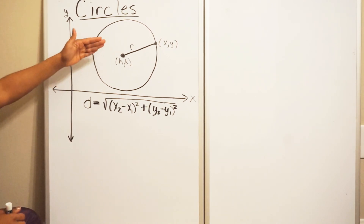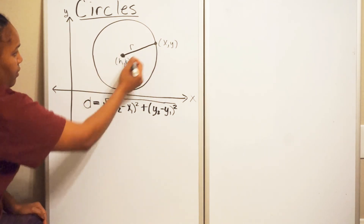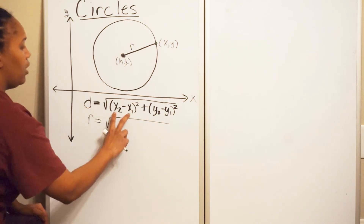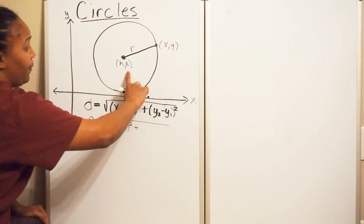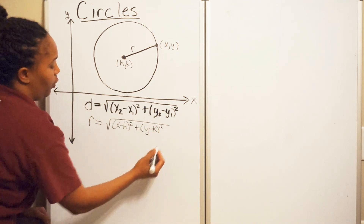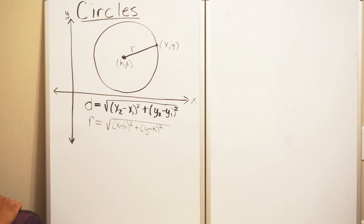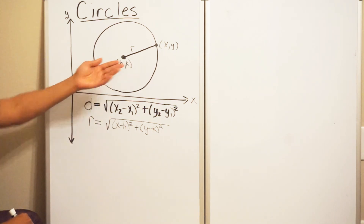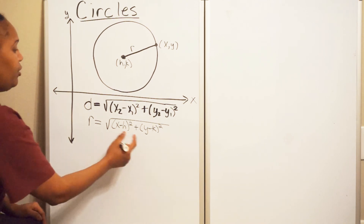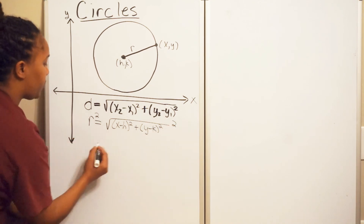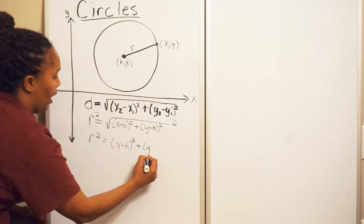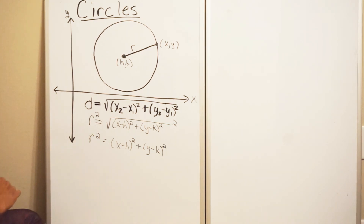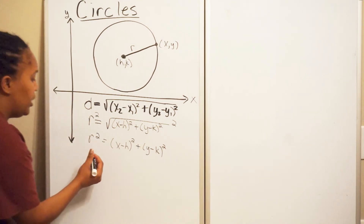If I use the distance formula to find the distance of the radius, then my d — which is my r — will equal the square root of (x minus h) squared plus (y minus k) squared. It doesn't matter which order you go in; you could do h minus x and it'll be the same. This gives me the radius using the two points on the circle. Now I'm going to get rid of the square root by squaring both sides. That gives me r squared equals (x minus h) squared plus (y minus k) squared.